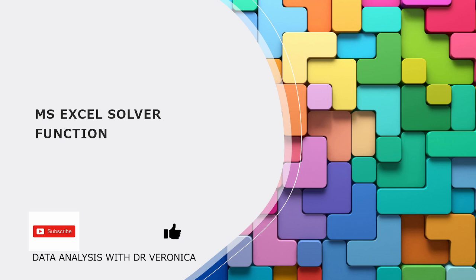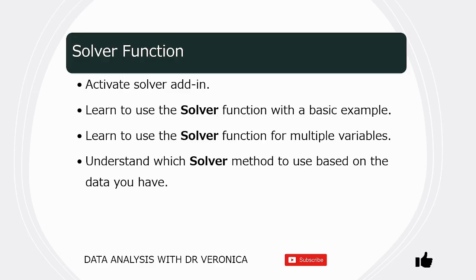This is a continuation from my previous video, GoalSeek, where we used the GoalSeek functionality to change one variable to get a predetermined result. In this video, we will see how to use the solver functionality to change multiple variables to get a predetermined result. We will also see how to activate the solver add-in to our Microsoft Excel workbook, how to use the solver functionality with a basic example, and in which situations we can use different solver methods based on the type of data model that you have.